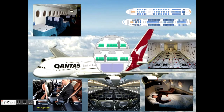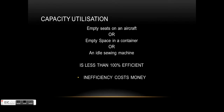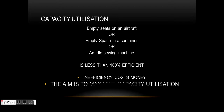By having different configurations we can attempt to achieve our overall objective: when we take off, the plane is full. Empty seats on an aircraft, empty space in a container, or an idle sewing machine is less than 100% efficient - it's not achieving maximum capacity utilization, which is our core objective.